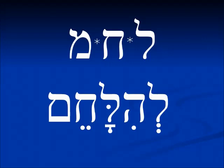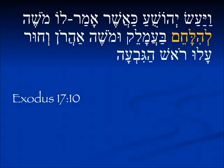Verbs which are in the Nifal get an extra Hey in the infinitive. So it's l'hilachem — there's an extra Hey there. This is a Nifal form. The meaning is 'to do battle,' and we don't think of it in terms of passive, but it does take that form always. In Exodus 17:10: Ve'ya'as Yehoshua k'esher amar lo Moshe, l'hilachem ba'amalek — and Joshua did as Moses told him, to fight, to do battle, with Amalek.